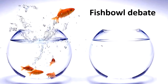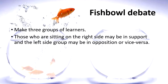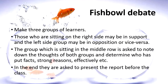The third famous technique is Fishbowl Debate. Generally, three groups of learners are made — the group on the right side speaks in favor of a proposed concept or idea, the group on the left side is in opposition, and the group in the middle row notes down the thoughts of both groups and determines who has put forward strong facts and reasons effectively. All groups present reports before the class. This technique is especially good for social science issues where different and contradictory views are possible.